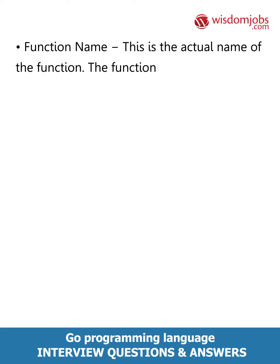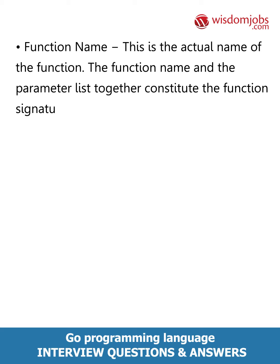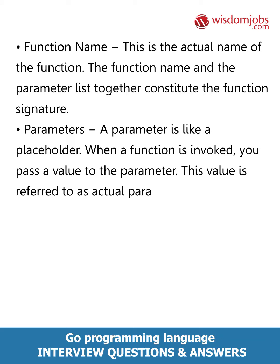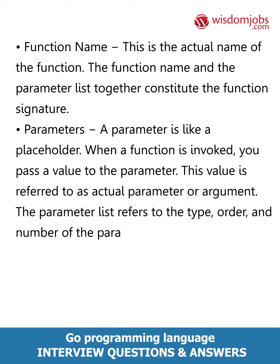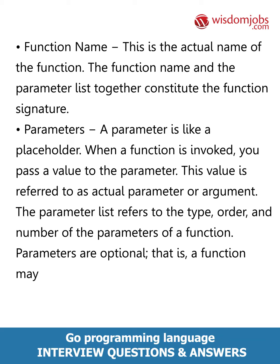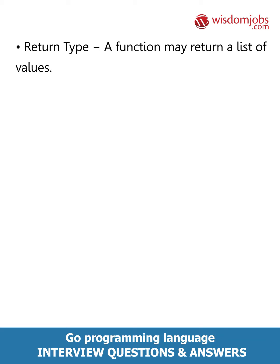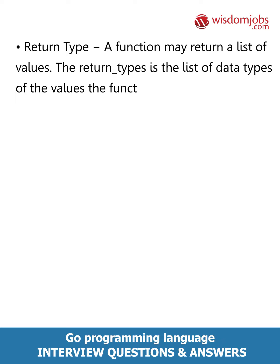func starts the declaration of a function. Function name: this is the actual name of the function; the function name and the parameter list together constitute the function signature. Parameters: a parameter is like a placeholder — when a function is invoked, you pass a value to the parameter, referred to as the actual parameter or argument. The parameter list refers to the type, order, and number of the parameters of a function. Parameters are optional — a function may contain no parameters. Return type: a function may return a list of values; the return_types is the list of data types of the values the function returns.